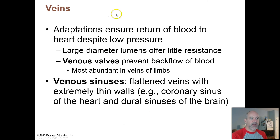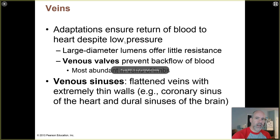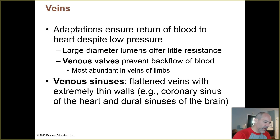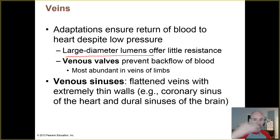The properties of veins help ensure the return of blood to the heart despite low pressure. With squishy, floppy walls and not much pressure, consider blood coming back from your legs — it has to flow back to the right atrium and empty into the inferior vena cava, all while fighting gravity. A few things help: the lumens have very large diameters and the walls are very thin, so blood flows more easily through larger diameter vessels. There's less resistance to flow.